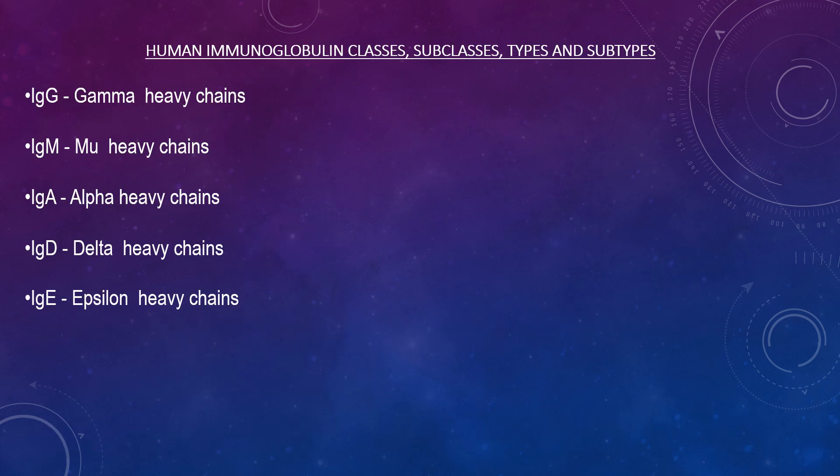Immunoglobulins can be divided into five different classes based on differences in amino acid sequences in the constant region of heavy chains. These differences can be detected by sequence studies or more commonly by serological means, using antibodies directed to these differences. These include IgG, IgM, IgA, IgD, and IgE, which have gamma, mu, alpha, delta, and epsilon heavy chains, respectively.